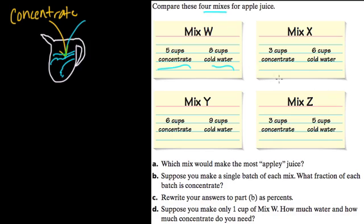The idea is the more concentrate you add, the sweeter the juice gets. Or in this case, they ask us which is the most apple-y? In other words, it'll taste most sweet in terms of this apple flavor. So you're comparing ratios of concentrate and water to figure out which of these actual mixes will make the sweetest juice, W, X, Y, or Z.